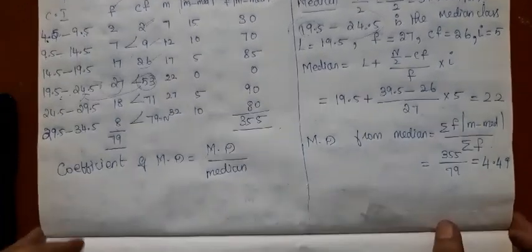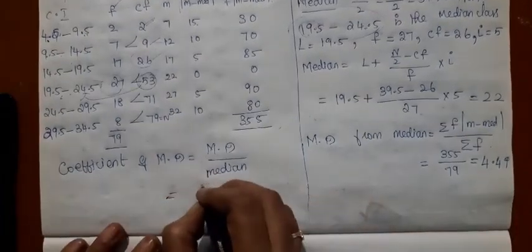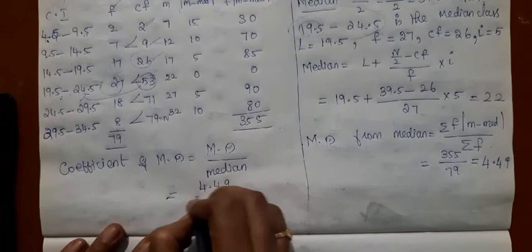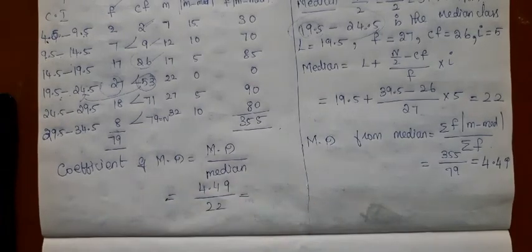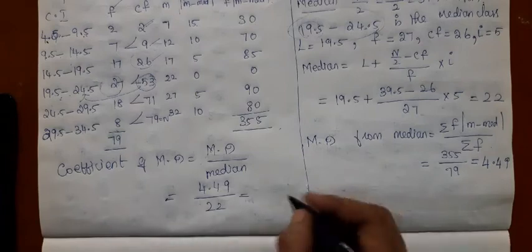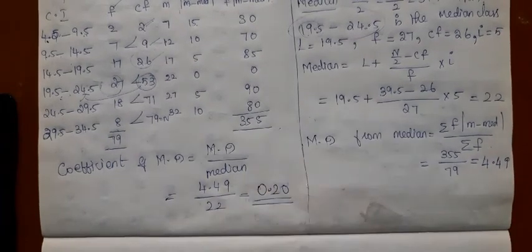Here we computed median, mean deviation from median. So 4.49 divided by median is 22. The answer is 0.20.